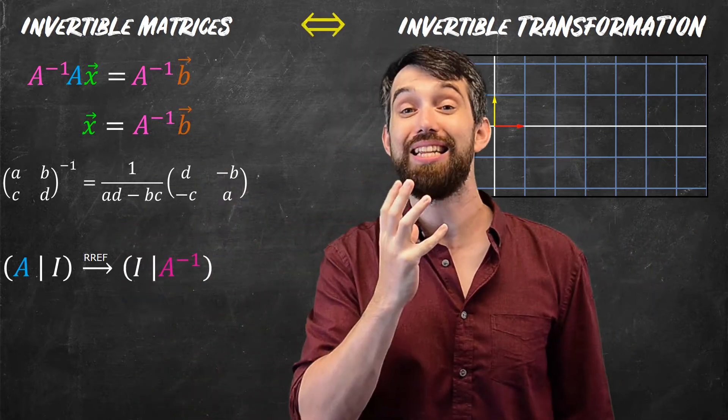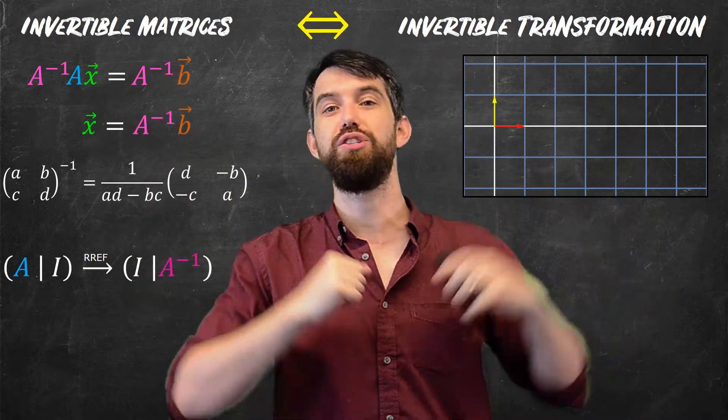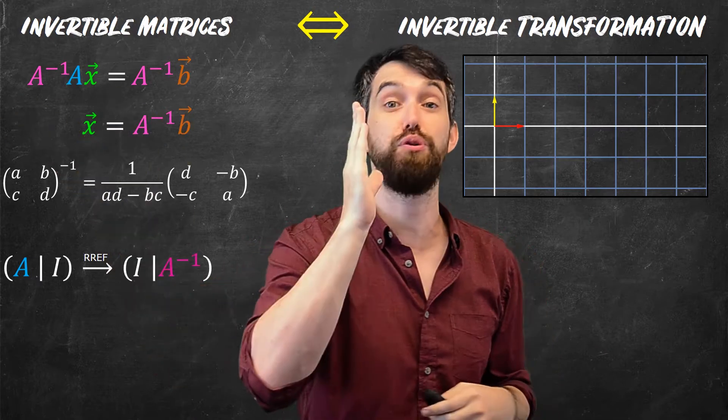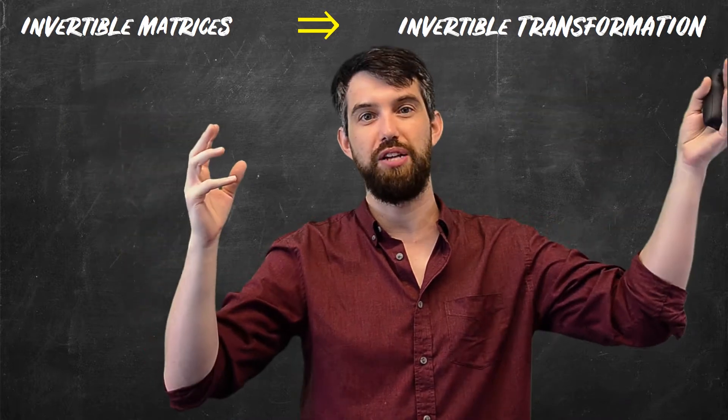And so there's two sides to this. I want to show that invertible matrix implies an invertible transformation. I want to show that invertible transformation implies an invertible matrix. My proof has two halves. First half is the direction invertible matrix implies invertible transformation.